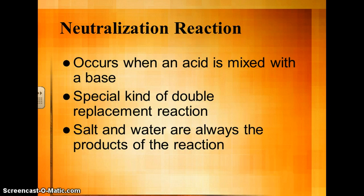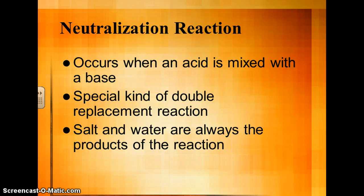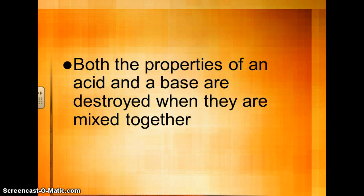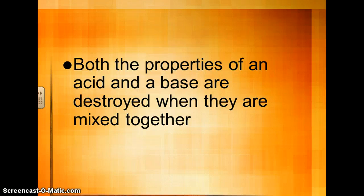A neutralization reaction occurs when an acid is mixed with a base, and it's a special kind of double replacement reaction where salt and water are always produced. So you have an acid plus a base, and it's going to produce salt — not necessarily table salt, there are lots of different kinds of salt — and water. Also during a neutralization reaction, the properties of the acid and the properties of the base are destroyed once they get mixed together.